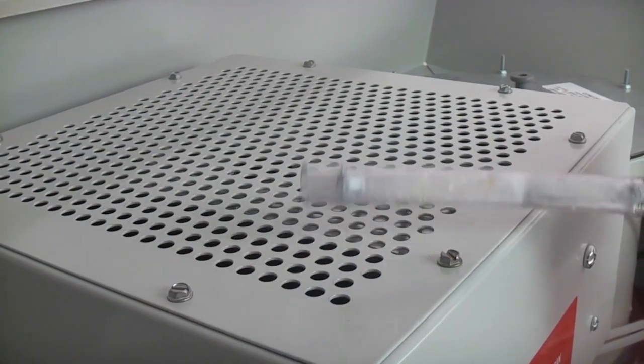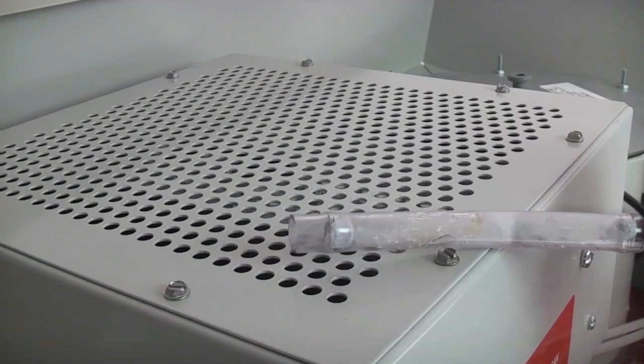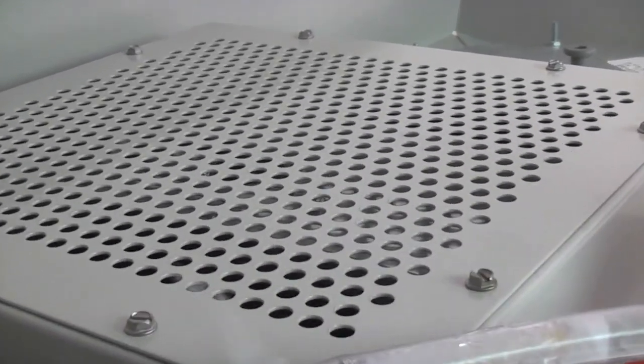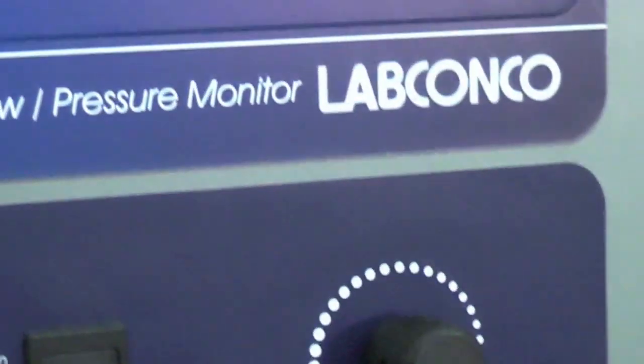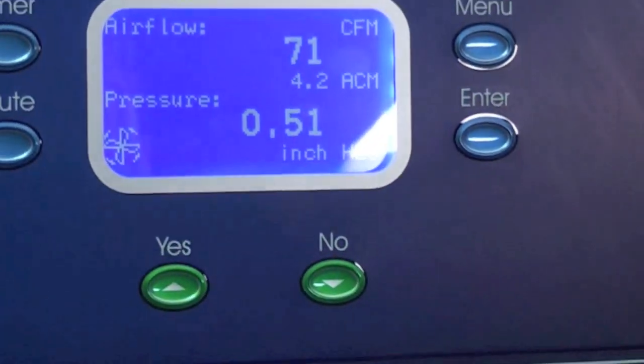These ventilated glove boxes include built-in variable speed blowers capable of air flows from 15 to 85 CFM. Adjustable air flow speeds make working with fine powders easier.